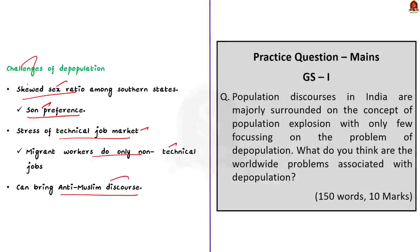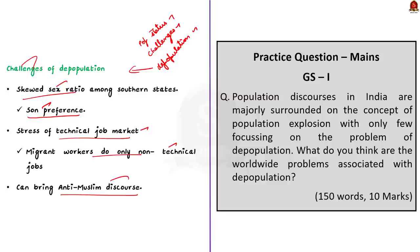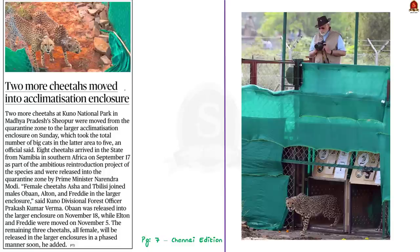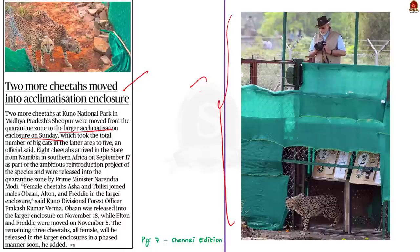This is a very important article regarding mains preparation — we saw the current population status of India, challenges due to overpopulation, and three challenges arising from depopulation in southern states. The next article discusses cheetahs being moved from the quarantine zone to a larger enclosure in Kuno National Park. To understand why a quarantine zone was needed, we need to know about reintroduction of species in India. Reintroduction is the intentional movement and release of an organism inside its indigenous range from which it has disappeared — the particular species used to be present but went extinct due to threats, and such a species is called the focal species.